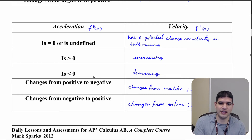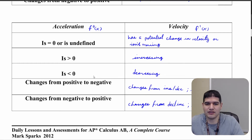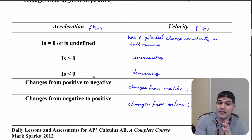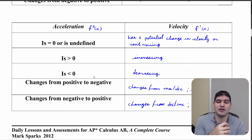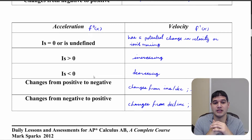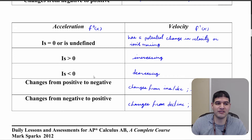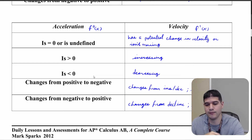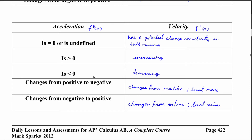Now let's look at the connection between acceleration and velocity — the second derivative with the first derivative. If acceleration is zero or undefined, then the velocity has a potential change — it could go from positive to negative or vice versa, or the particle has just stopped. If acceleration is positive or negative, velocity is either increasing or decreasing. If acceleration changes from positive to negative, velocity reaches a local maximum; if it goes from negative to positive, velocity has a local minimum.